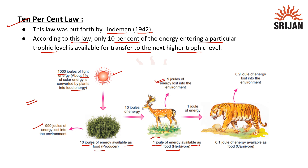Now, out of this 1 joule of energy, 10% — that is 0.1 joule — would be available as food for carnivores, whereas 0.9 joule of energy would again be lost to the environment in the form of heat.